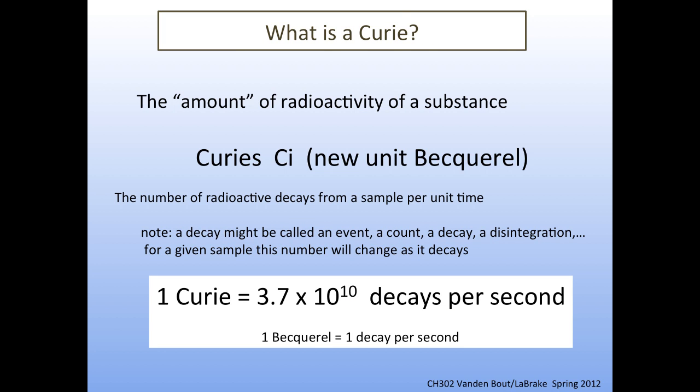So what is a curie? A curie is the amount of radioactivity of a given substance. If I have a hunk of uranium, it has a certain number of curies. The number of curies is related to the actual number of radioactive decays from that particular sample per unit time — usually per second. One curie turns out to be equal to 3.7 times 10 to the 10th decays per second. That's a lot of decays.